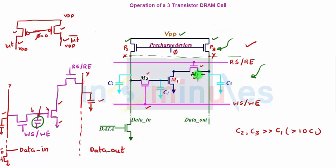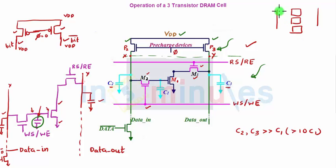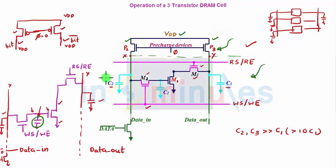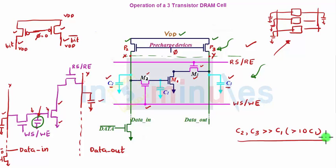C2 and C3 are capacitors connected to these lines. In real time, many three transistor DRAM cells are connected to these lines, so they contribute capacitance in parallel, which adds up. C2 and C3 will have very large values compared to C1. Just remember that C2 and C3 have large values compared to C1, and this is how the circuit looks.